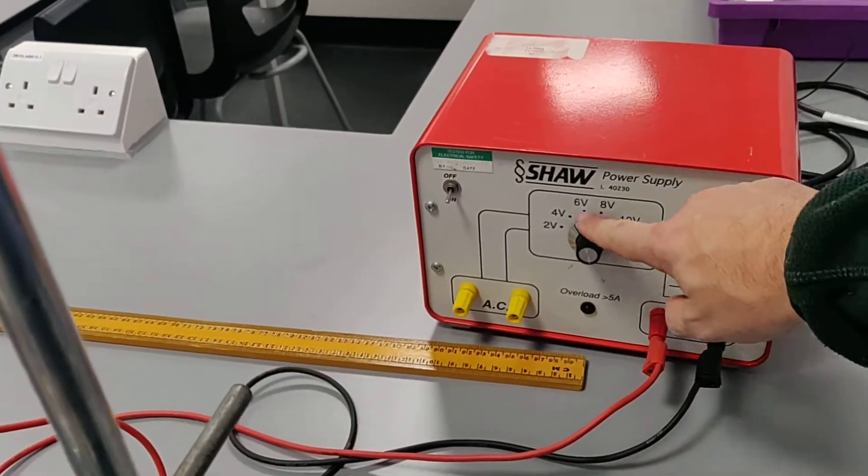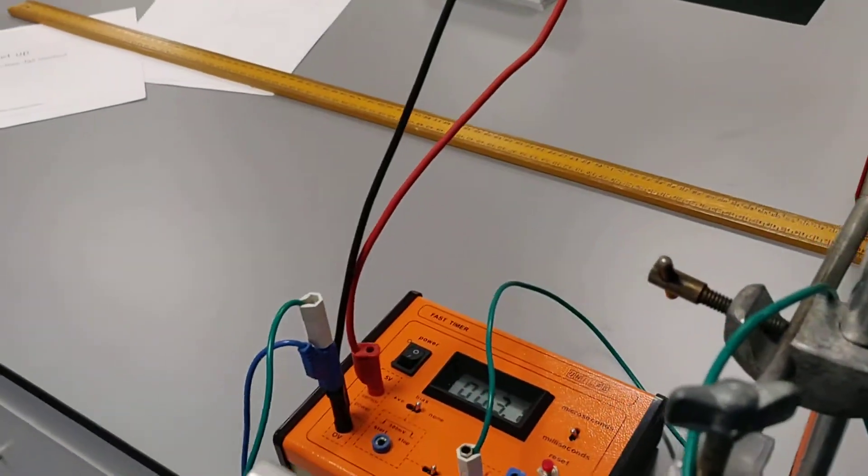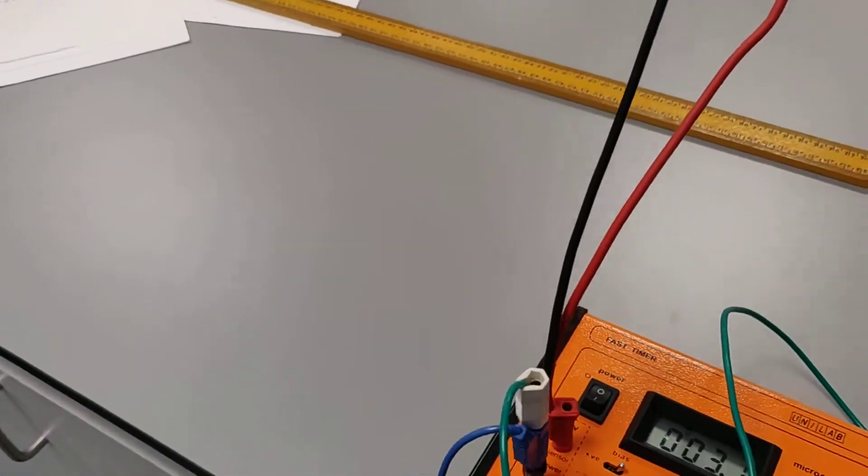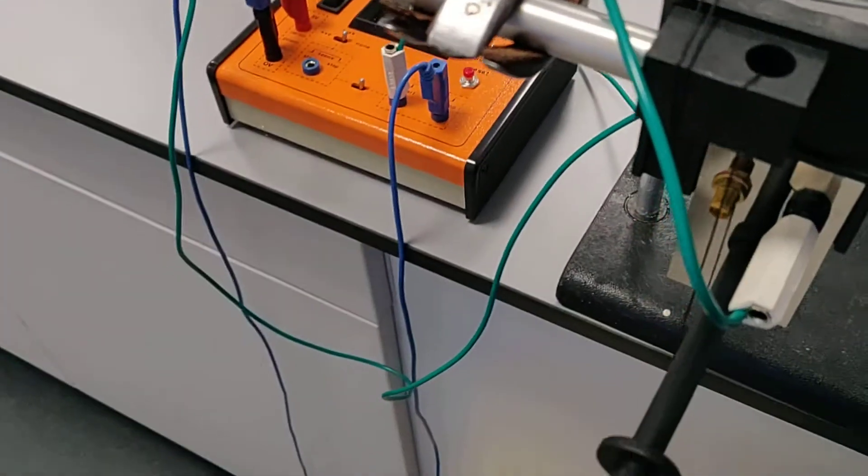We've just got a lab power supply here set on 4 volts DC, and that's actually connected to a timing unit. Can you see this timing unit here? And this timing unit is connected to this ball release mechanism.